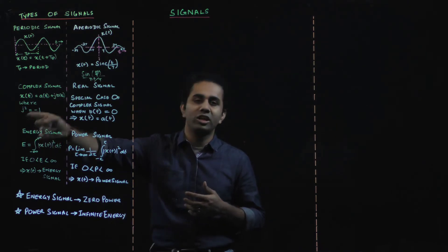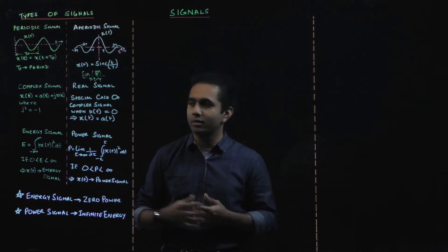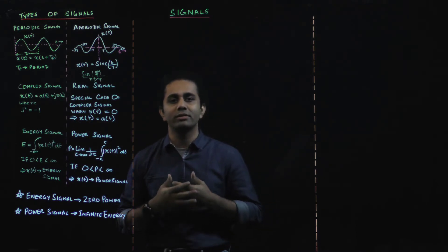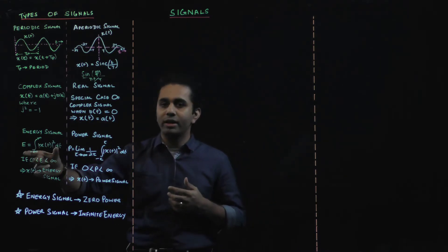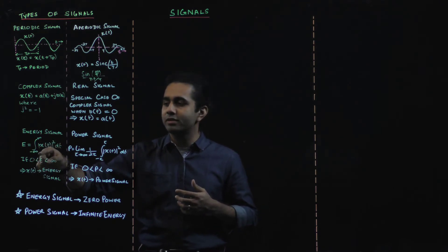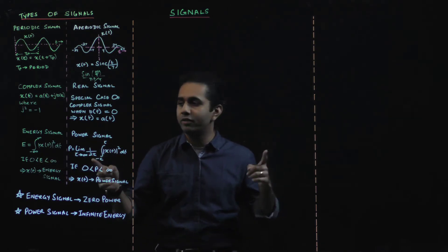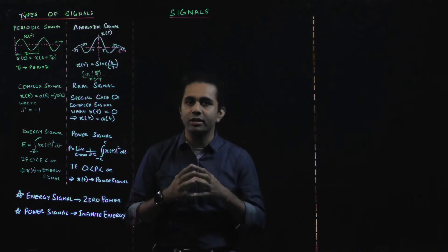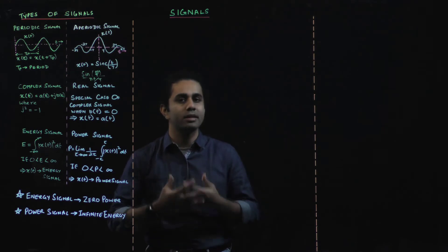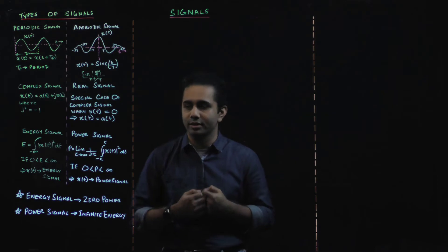Then we get to the definition of an energy signal and a power signal. First, the energy of a signal is defined as the integration of the square of the signal over the whole time period from minus infinity to infinity. If this energy is greater than 0 but less than infinity — meaning it has some finite value — we can say that X(t) is an energy signal.